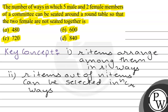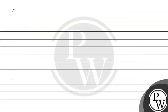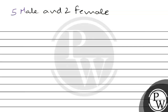We will solve this. We have 5 male and 2 female members to arrange around a round table with the condition that the 2 females are not seated together. First, the remaining 4 males can be arranged in 4 factorial ways.